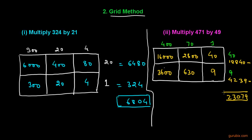So this is the solution of the multiplication of 471 by 49. This method is called the grid method.